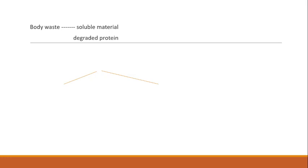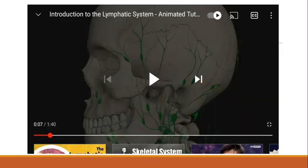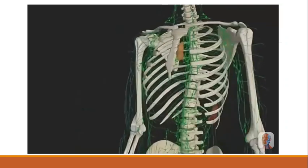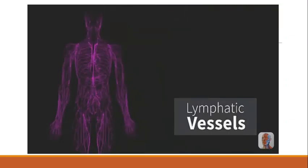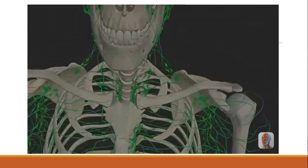The waste products can be formed as soluble material, degraded proteins, and excessive fluid from the interstitial space. In the peripheral tissues we have a definite system for that, which is called the lymphatic system. This is a slide showing the normal lymphatic system — it is a widespread system of ducts present throughout the body, containing lymphatic vessels, lymph nodes, and lymphatic organs. All lymph eventually enters the thoracic duct and right lymphatic duct, which drain into the venous system.